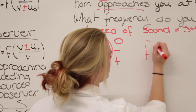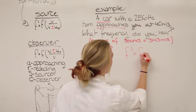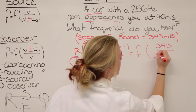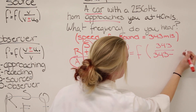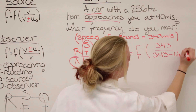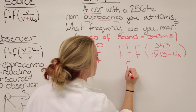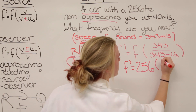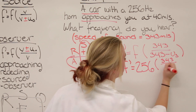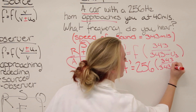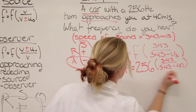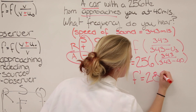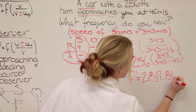Plugging this into our source equation, which is F prime equals F times the speed of sound divided by the speed of sound minus the velocity of the source, we will get 256 times 343 divided by 343 minus 40, which equals 289.8 hertz.